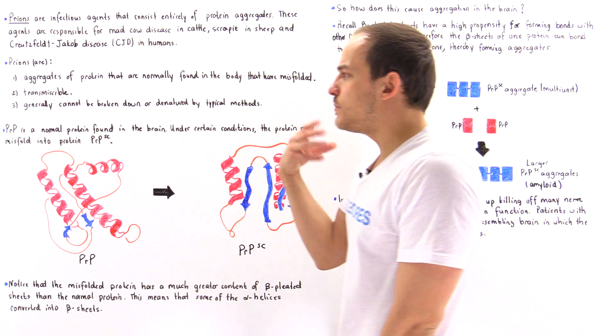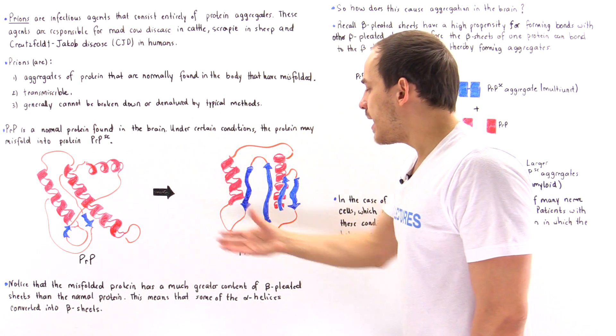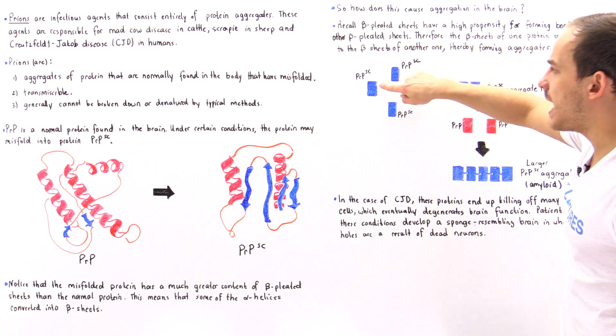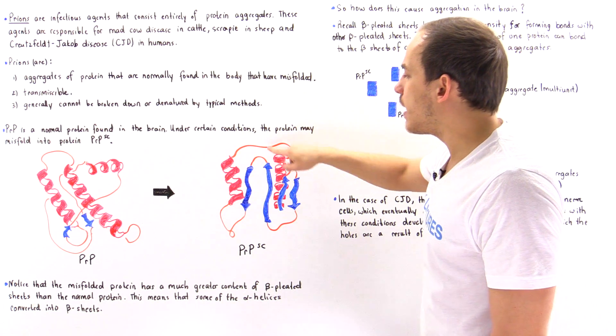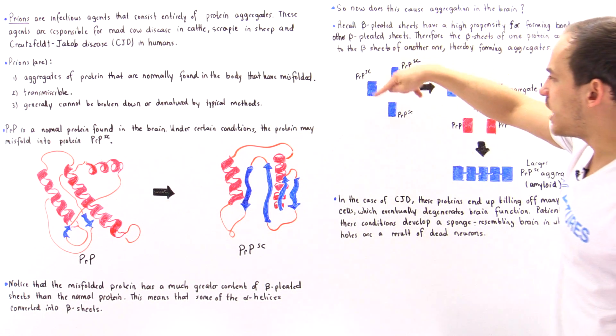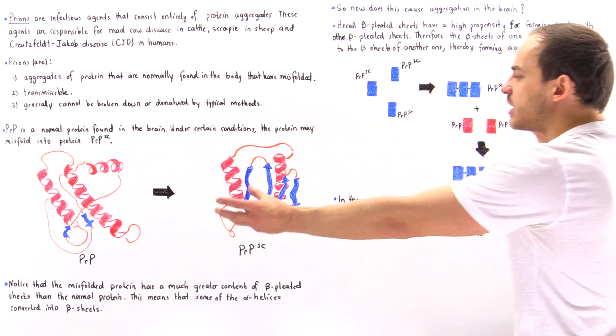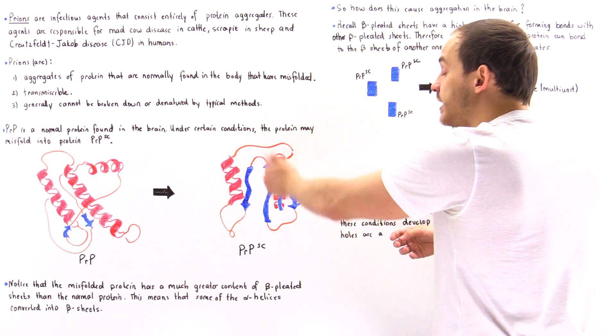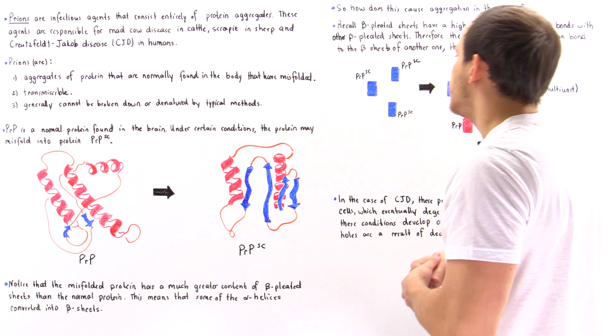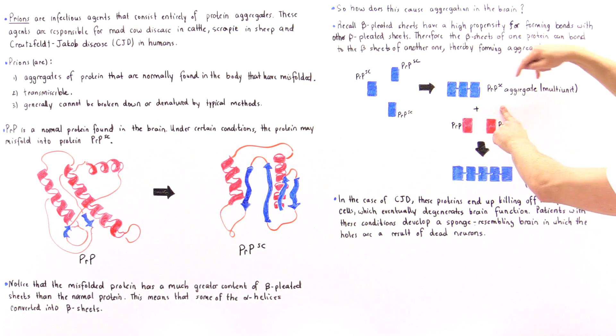Let's suppose some type of mutation took place or some event happened that led to the formation of these molecules. We have, let's say, three misfolded proteins. Because they consist predominantly of these blue beta pleated sheets, they are drawn in blue. Because of the presence of these beta pleated sheets, they will bond with each other as a result of those beta pleated sheets being attracted to one another via non-covalent bonds. Eventually we form this multi-unit aggregate of three PRPSC molecules.